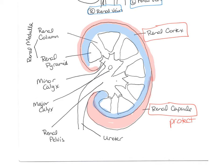The innermost portion is called the renal medulla, which contains a couple of different structures. There are renal pyramids within the renal medulla, and in between the renal pyramids we have renal columns. The renal medulla includes both the pyramids and the columns. The renal columns are really just an extension of the renal cortex tissue going down in between those renal pyramids.